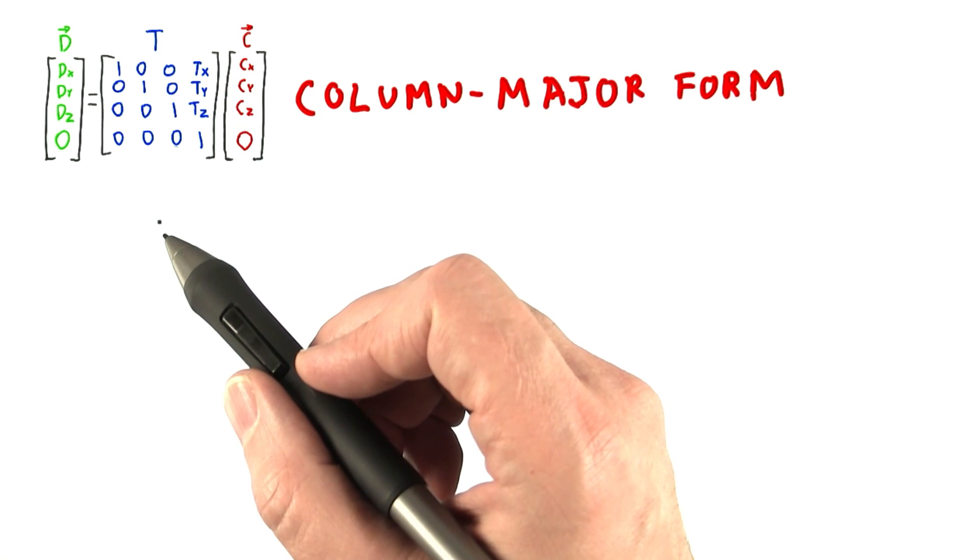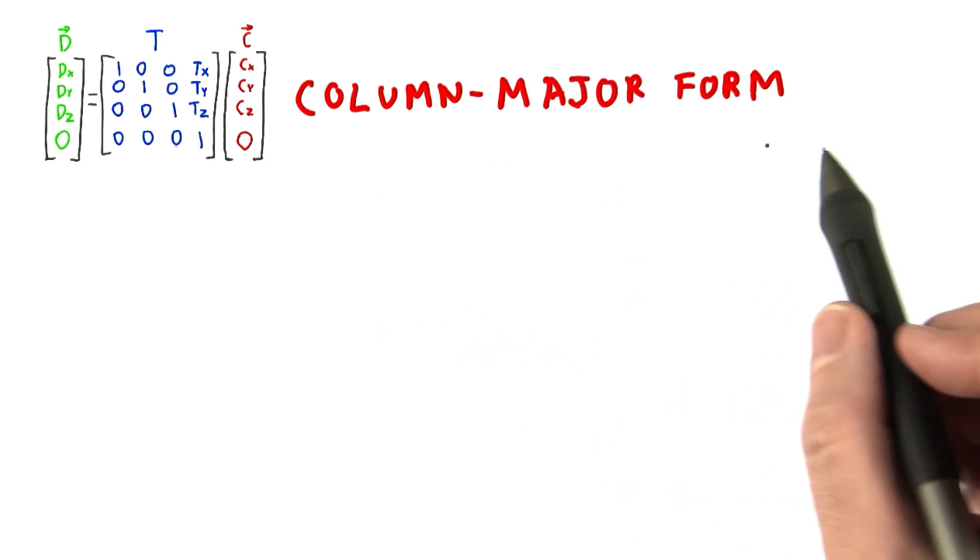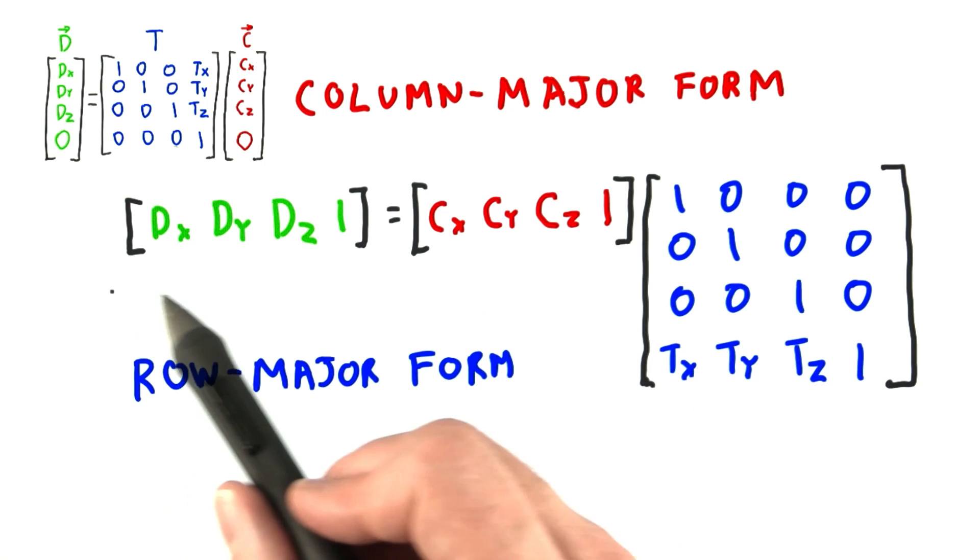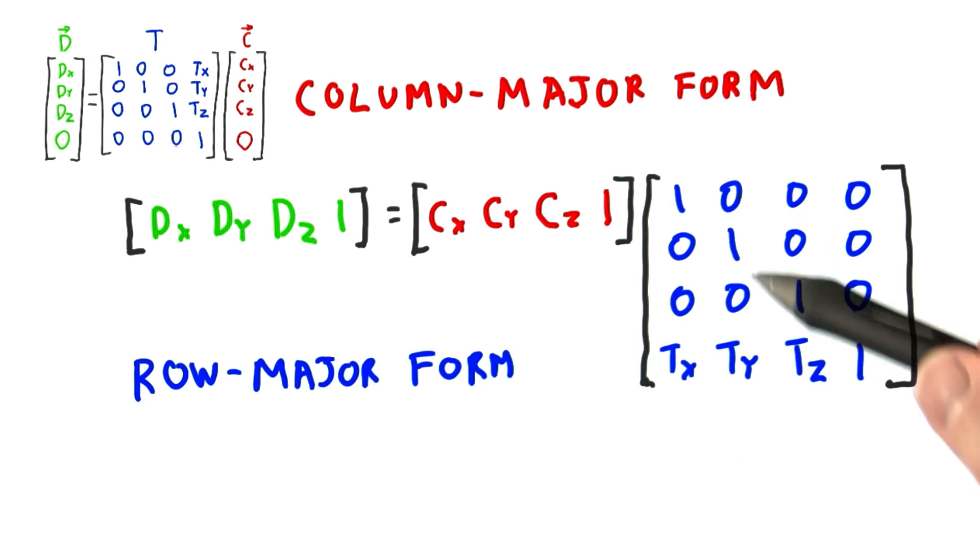One thing worth mentioning at this point is that this type of matrix and vector notation is called column major form. There is also a row major form for notation, where the coordinates are written out in a row. The vector row is multiplied by each column of the matrix in turn.